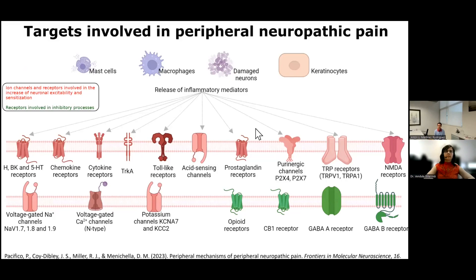There are several targets and channels involved in this process. Some of them are stimulated by substances released from other cells, such as inflammatory cells, damaged neurons, or even keratinocytes. Others have an inhibitory effect.